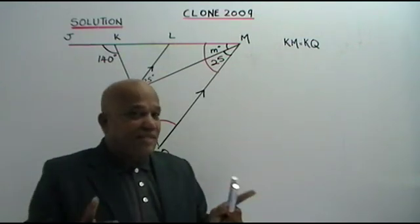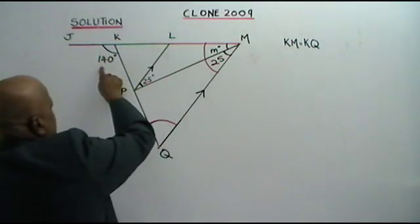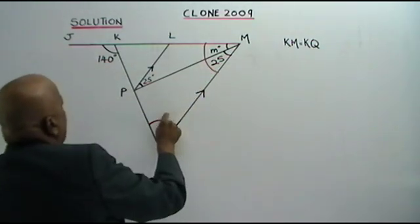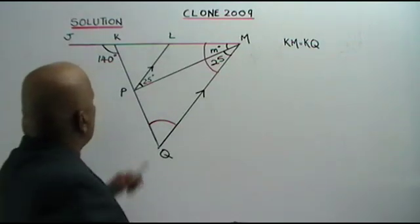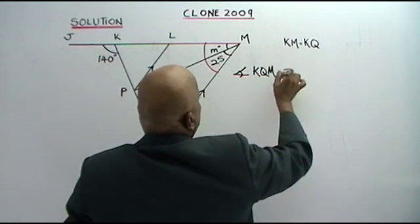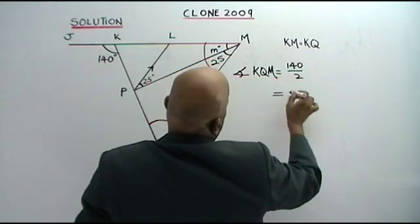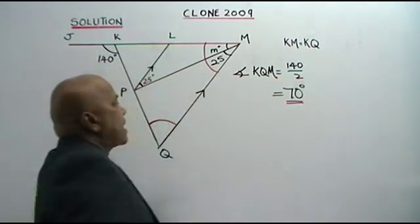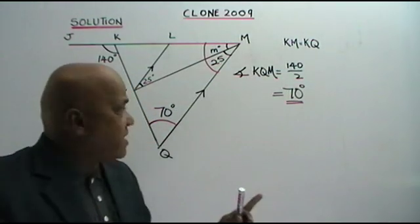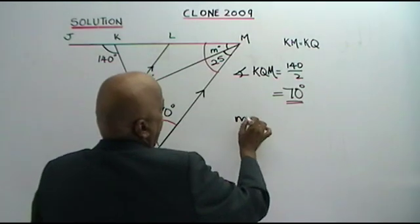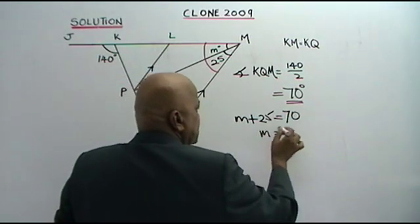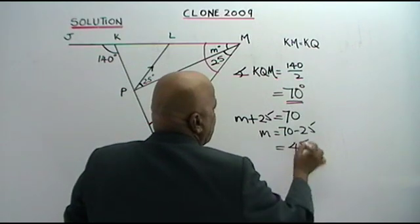Now we use the next theorem: the exterior angle of a triangle is equal to the sum of the interior opposite angles. That means these two angles add up to 140 degrees. So angle KQM is equal to 140 divided by 2, which is 70 degrees. And these two angles are equal because of base angles. Therefore, M plus 25 equals 70, so M equals 70 minus 25, which equals 45.